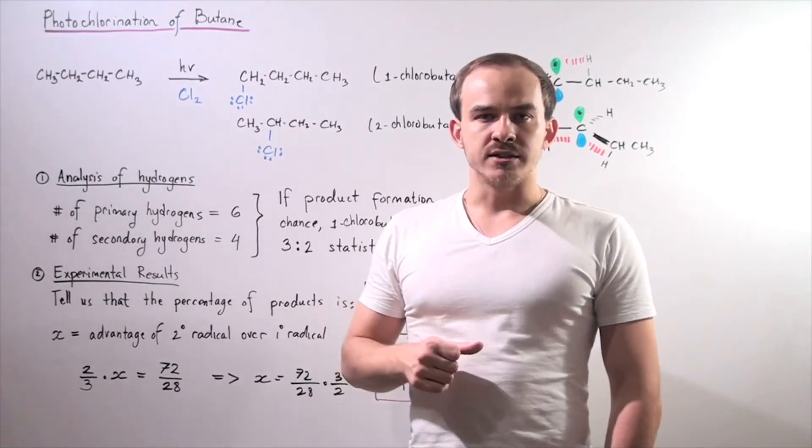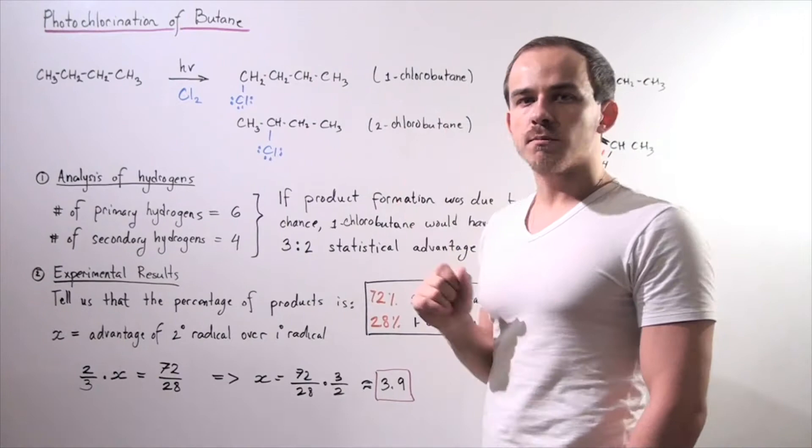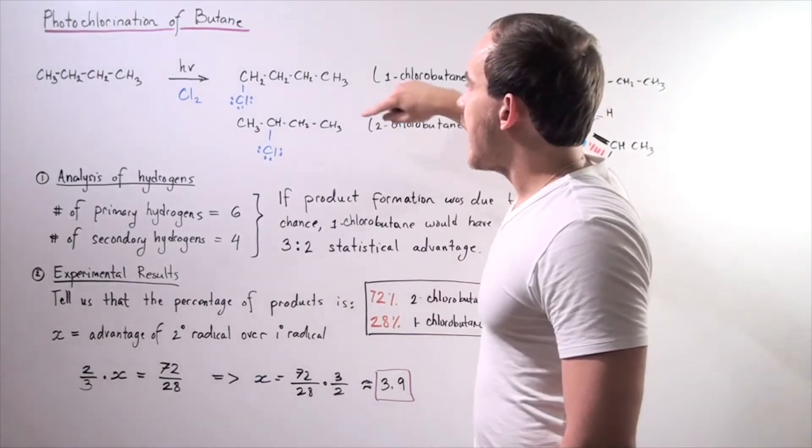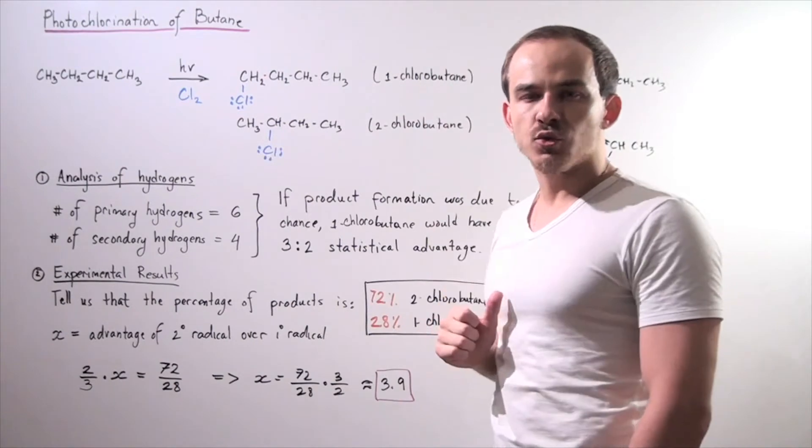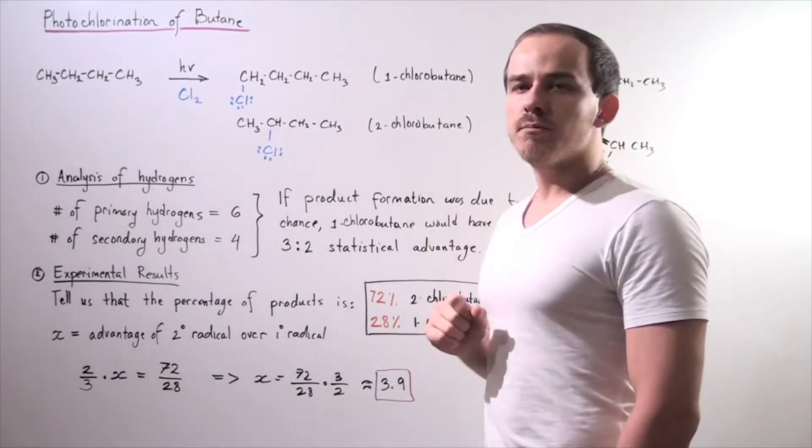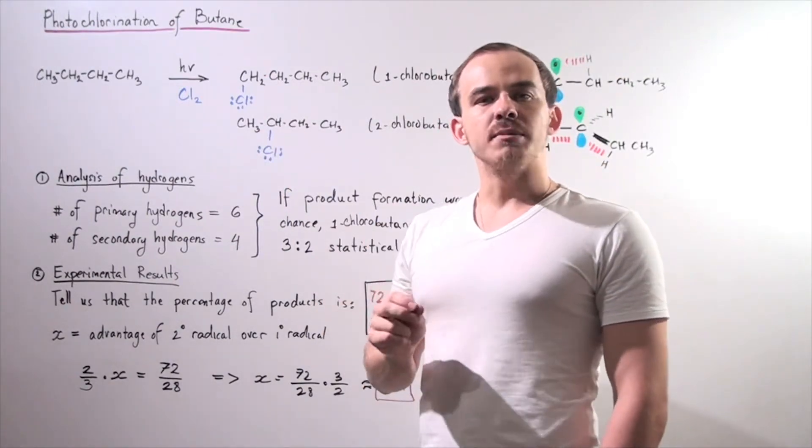We allow our reaction to take place and produce the following two products. We have one-chlorobutane on which we have the chloride attached to the primary carbon, and we also produce a second product, two-chlorobutane, where we have the chloride attached to our secondary carbon.